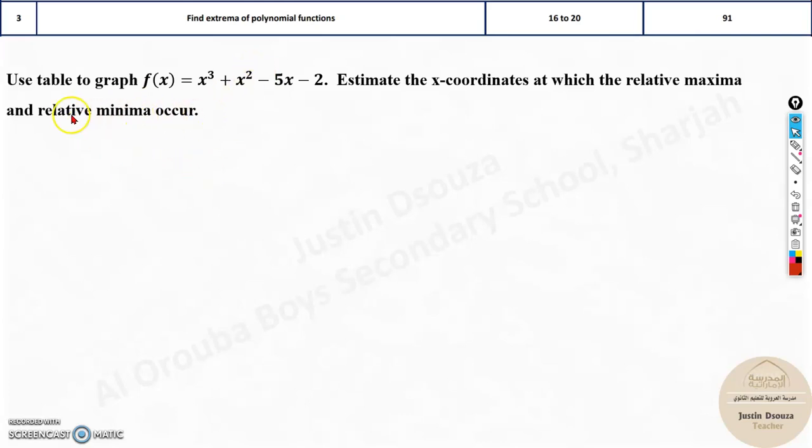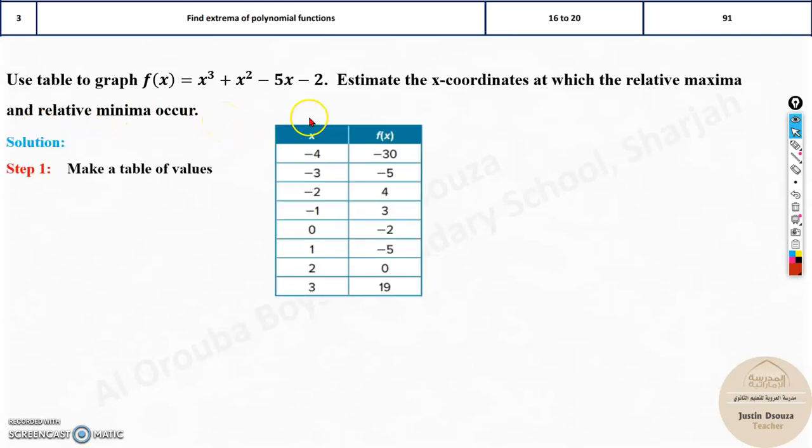Now, you need to check for the relative minima or maxima. What you have to do is make a table. It's very simple. You need to just assume x values. Since we know it is x to the power 3, it's a cubic graph. When it's positive, it goes upwards and downwards, something like this.